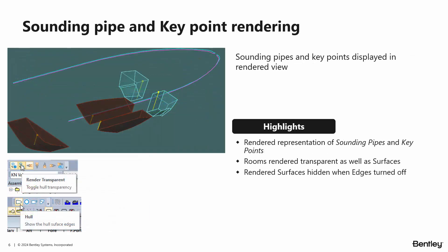In stability, we've added key points and sounding pipes to the rendered image. In addition, when you render the hull transparent, the rooms — i.e., the tanks and compartments — are also made transparent to make it easier to see these sounding pipes. As a reminder, you can hide all the hull surfaces or all the internal surfaces by turning off their edges.